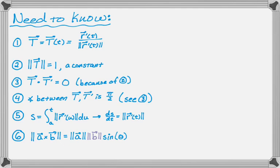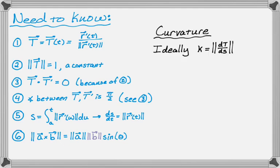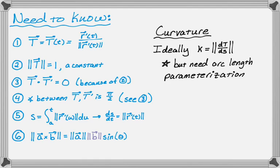In a perfect ideal world, curvature would be the rate of change of the unit tangent vector with respect to arc length. The problem is, if you've tried to find arc length parameterizations, you know those are not super easy to find. So what we want to do is come up with a way to use this formula without needing explicitly an arc length parameterization — and we're definitely going to be able to do that.